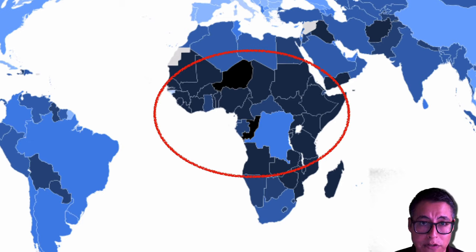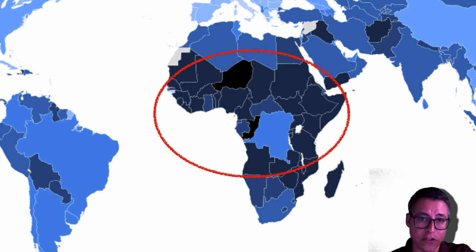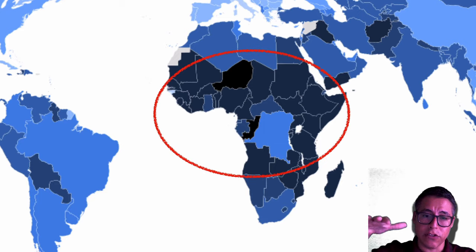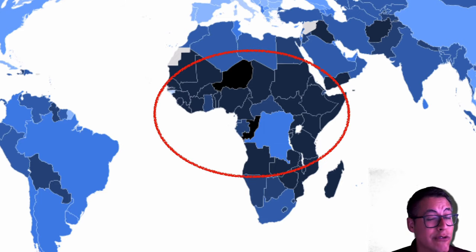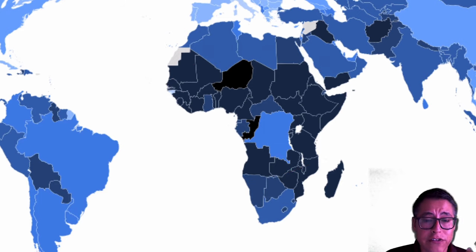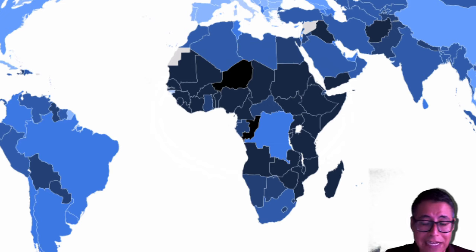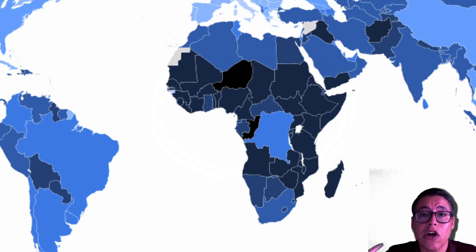I say 'usually' because there are always exceptions. As geographers look at these kinds of data, they can help us infer and solve a lot of problems as well. So high economic development usually means an older population, and lower economic development usually means a younger population.